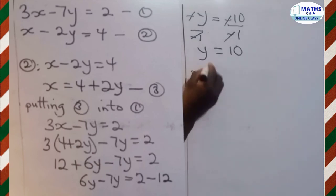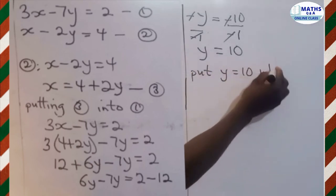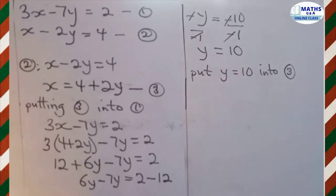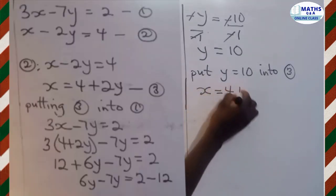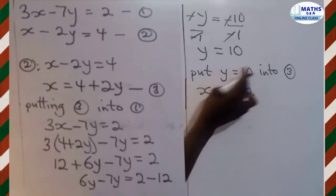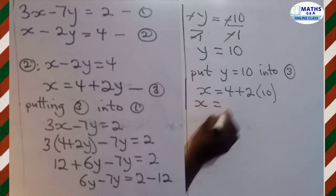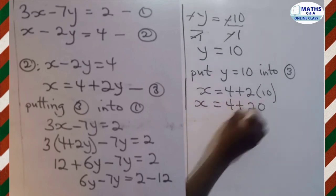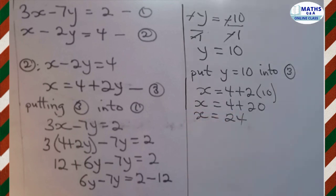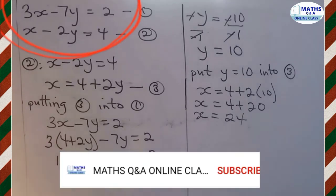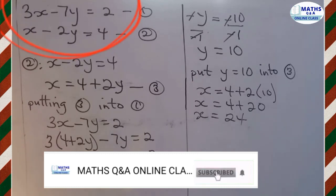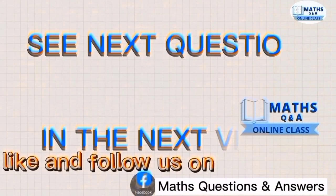To find x, substitute y equals 10 into equation 3: x equals 4 plus 2 times 10, which gives x equals 4 plus 20, so x equals 24. Therefore, x equals 24 and y equals 10. This is the final result for the simultaneous equations 3x minus 7y equals 2 and x minus 2y equals 4.